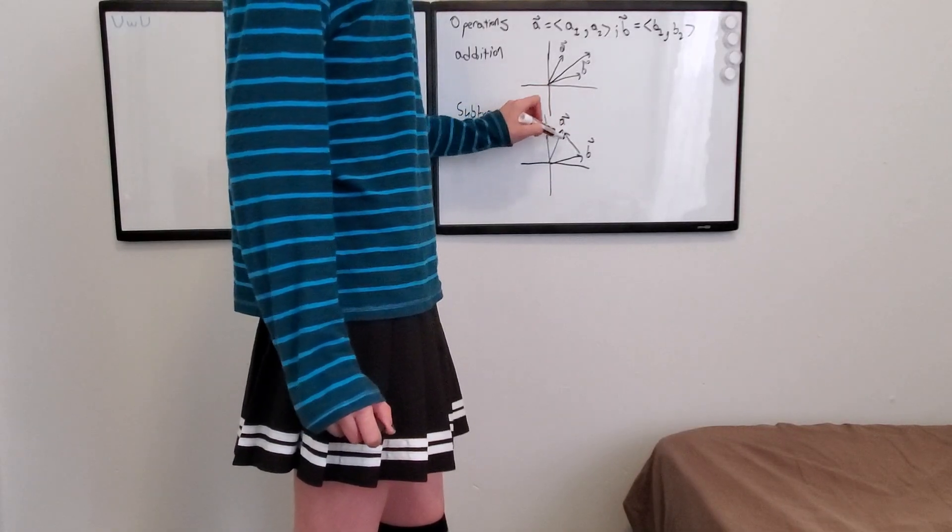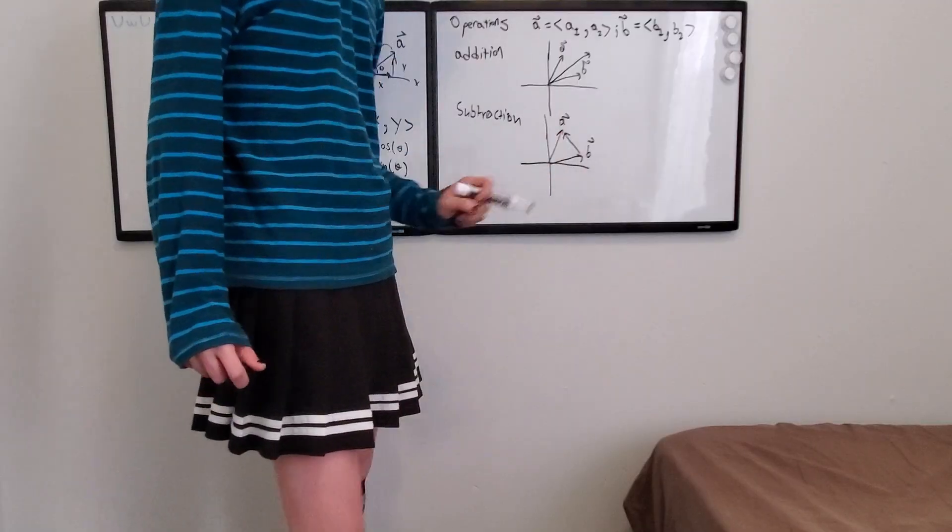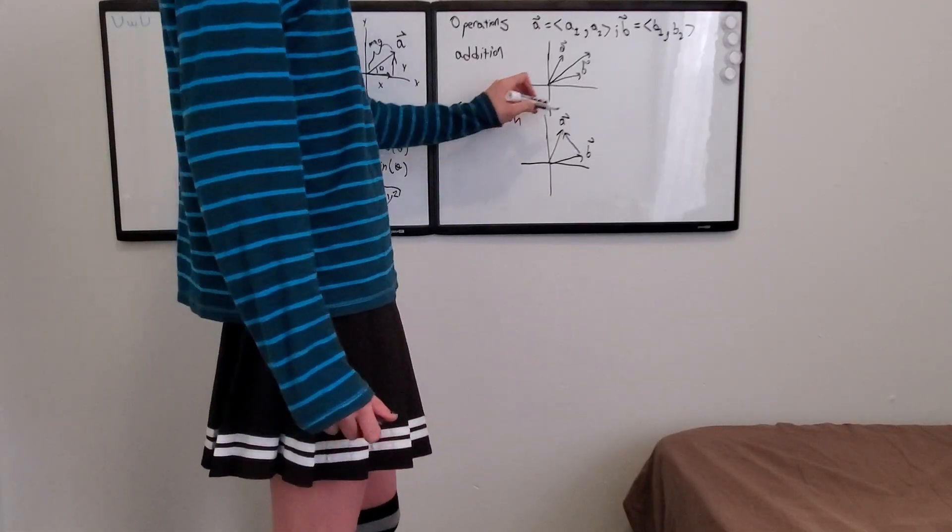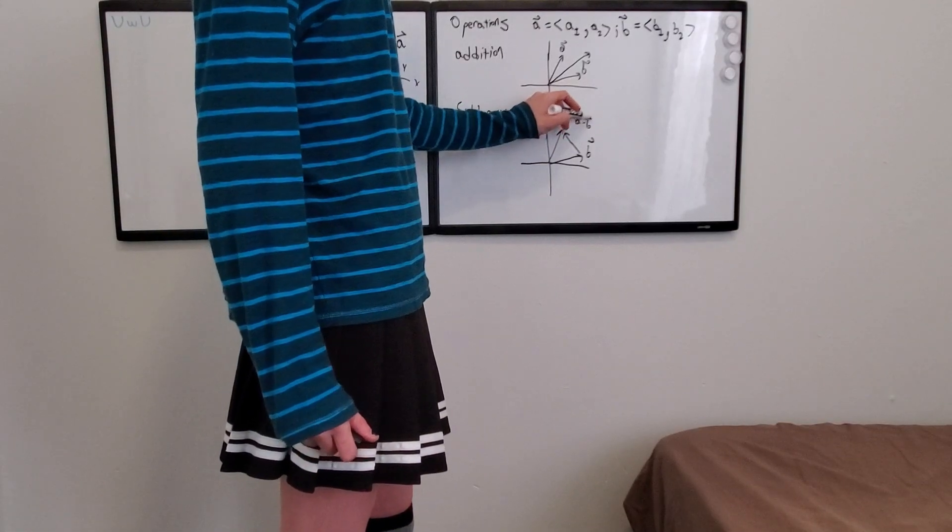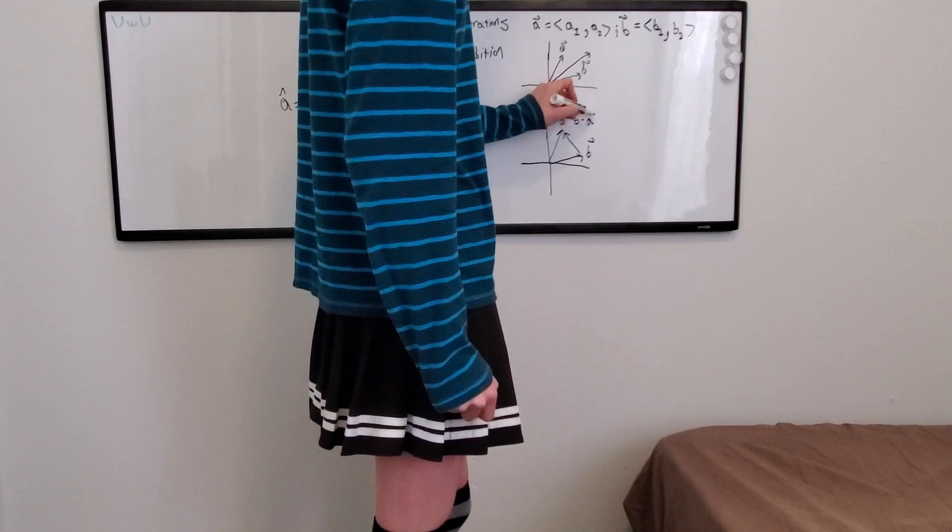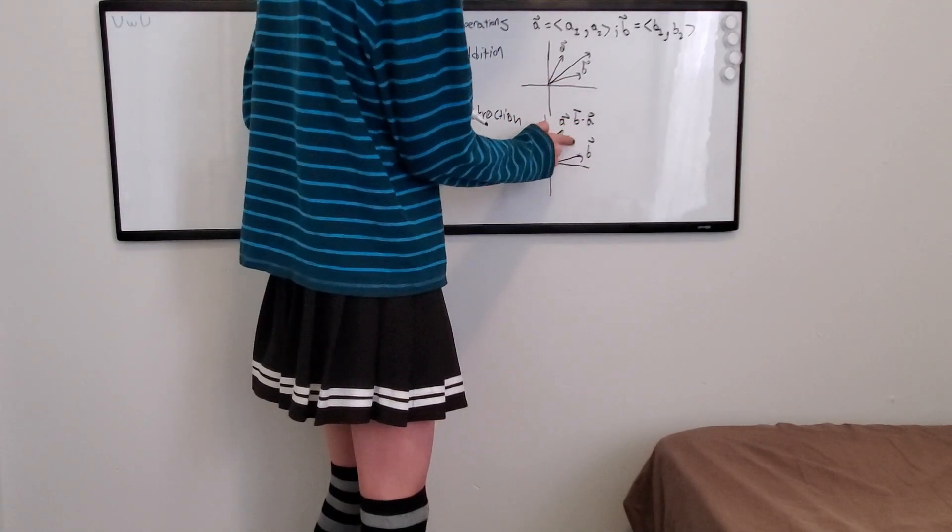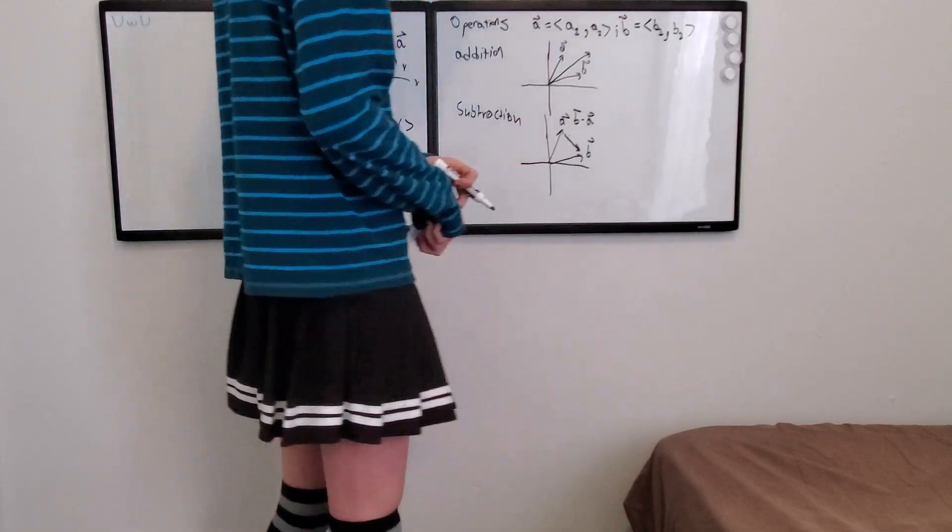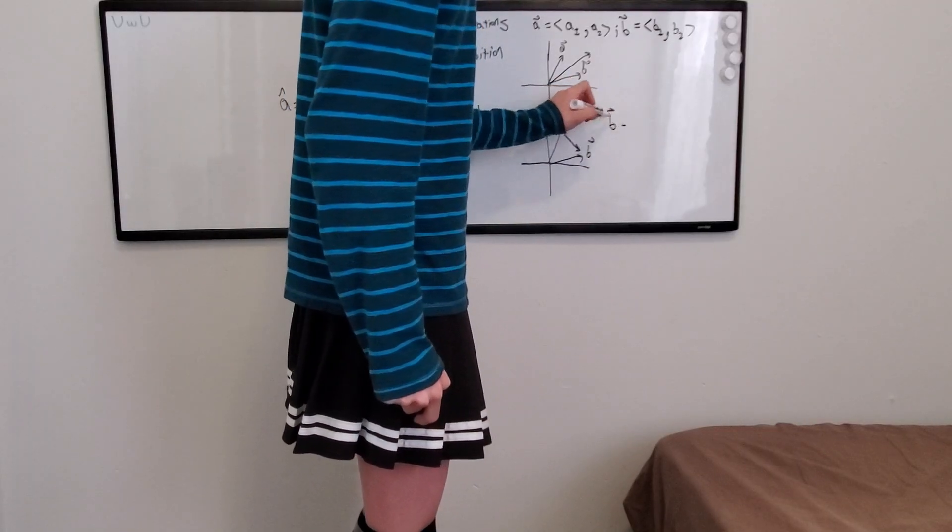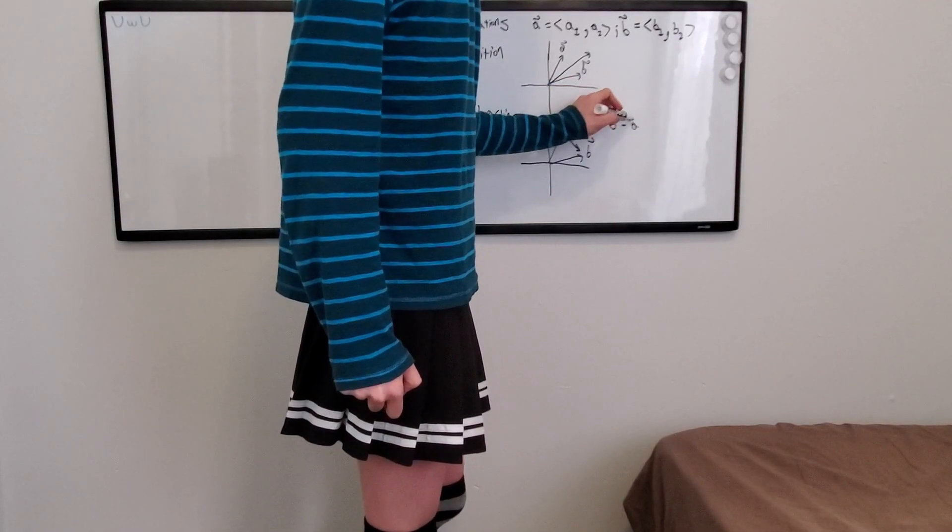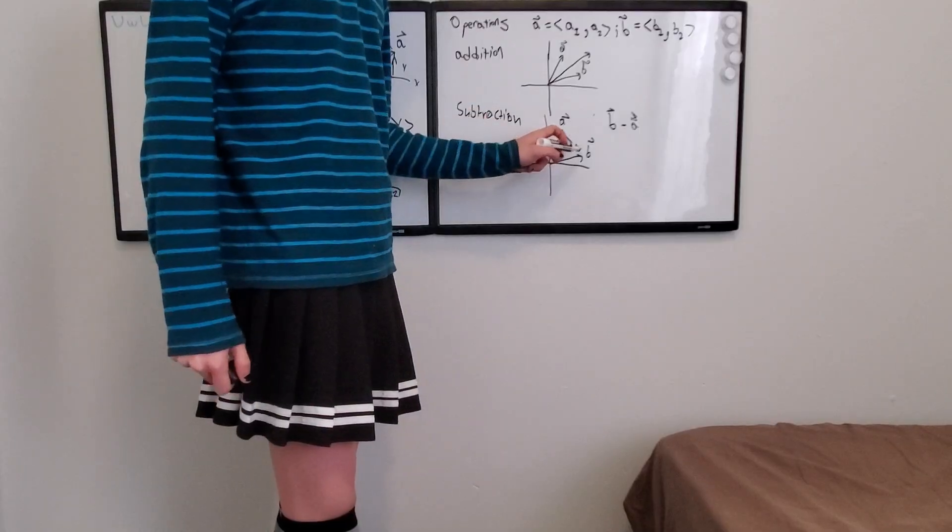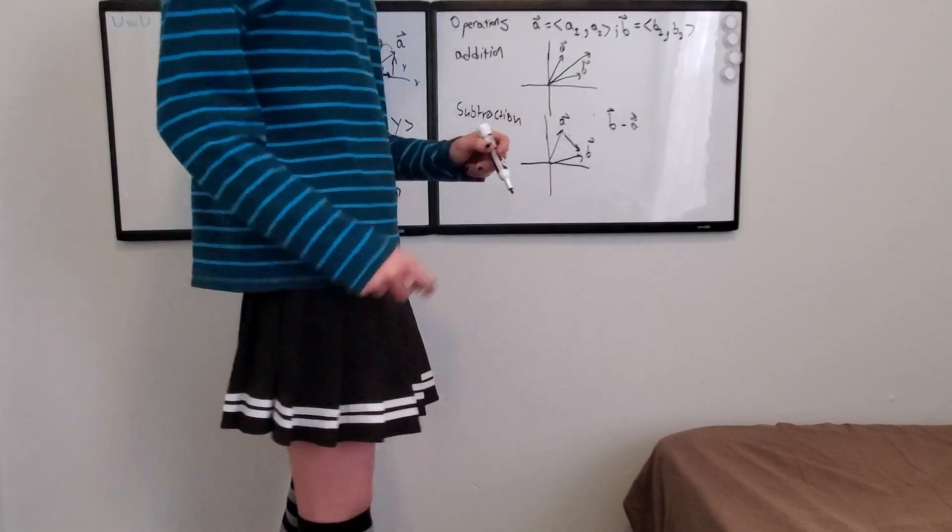And subtraction: you can think of it like this, where you have the vectors A and B. You could think of it as a vector spanning the space in between the tips of the two vectors there. Now, gotta remember that this is for A minus B. If it was B minus A, this would be pointing the other way. An easy way to remember that is to think of this first term, B minus A, as where the tip of the arrow starts, and the second term is where the tail is.